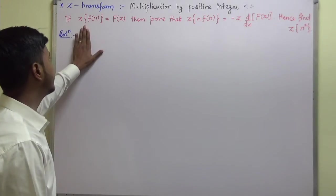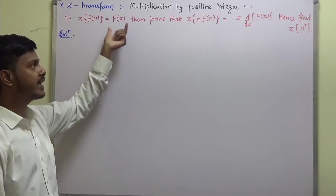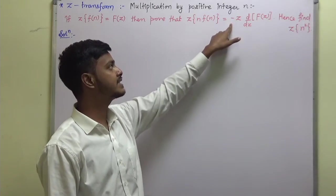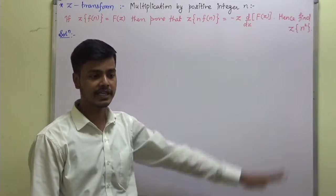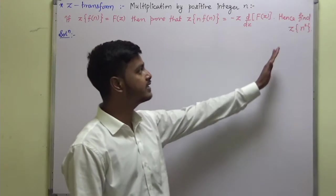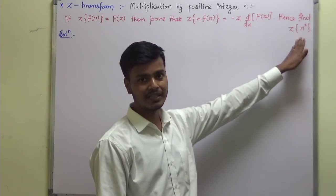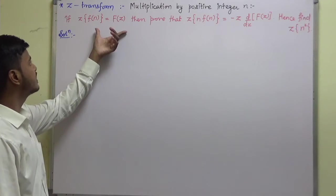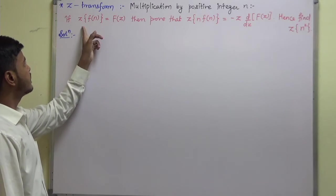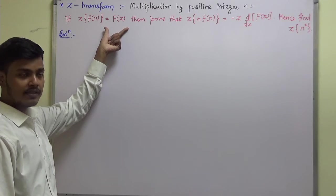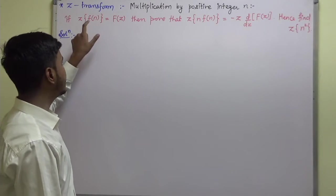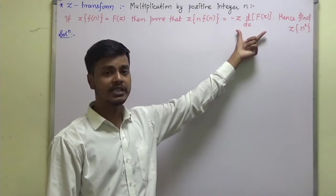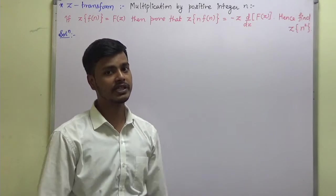This property says: if Z transform of f(n) is F(z), then prove that Z transform of n·f(n) is minus z into d/dz of F(z). We also have to find the Z transform of n squared — that is the second part we will concentrate on later. If Z transform of f(n) is F(z), then if you multiply this function by n, its Z transform should be that expression — that is what we want to prove.